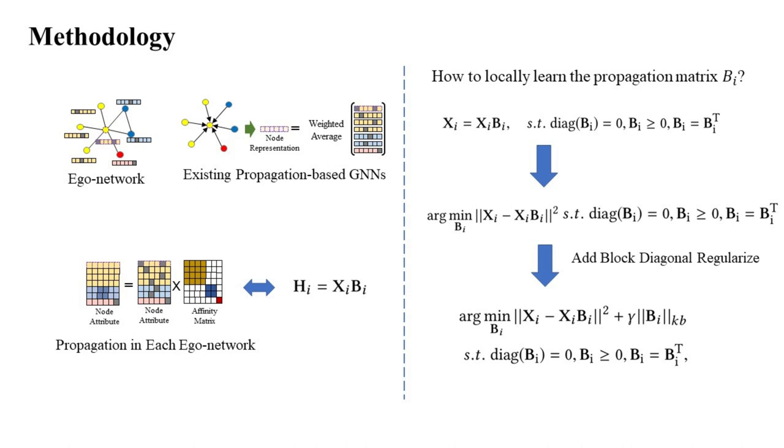So, the question is how to locally learn the propagation matrix? We translate the problem into formulations. To make the propagation matrix demonstrate the affinity between nodes, the self-representative learning framework is employed with K-block diagonal regularization.